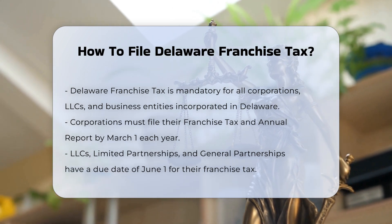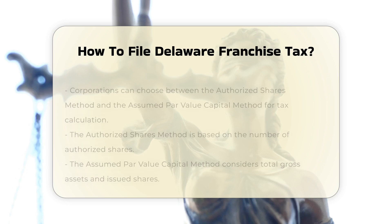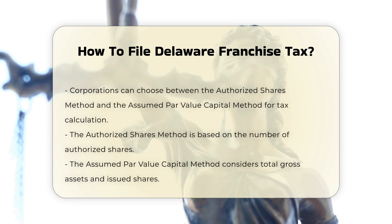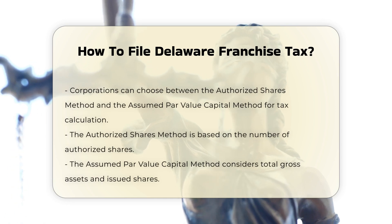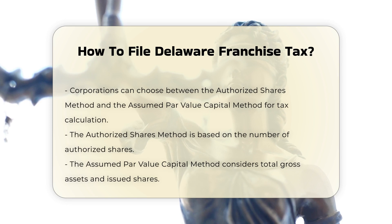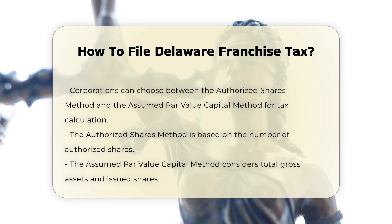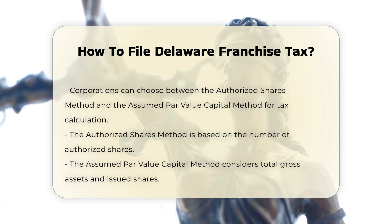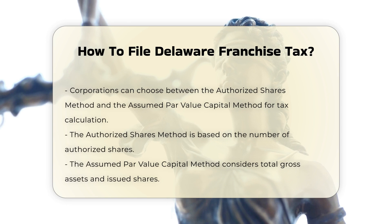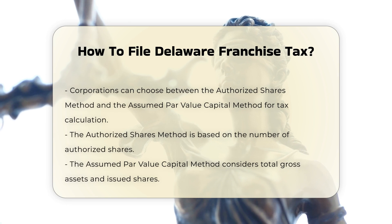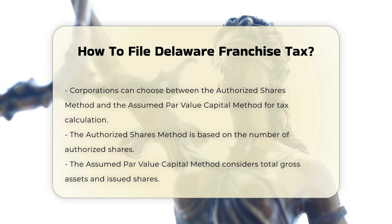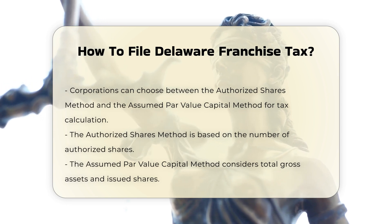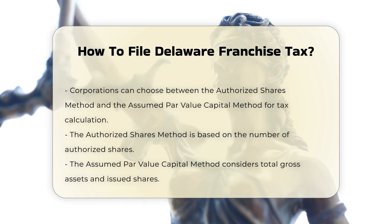Calculation Methods. Corporations can use either the Authorized Shares Method or the Assumed Par Value Capital Method to calculate their franchise tax. The Authorized Shares Method is based on the number of authorized shares, while the Assumed Par Value Capital Method is based on the total gross assets and issued shares.